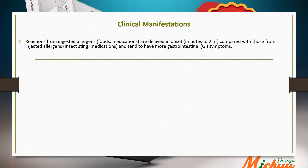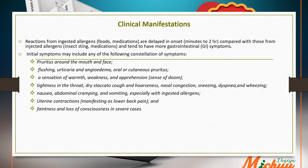Anaphylactic reactions from ingested allergens such as food and medications are delayed in onset — most often minutes to two hours — compared with those from injected allergens such as insect stings and medications, and they tend to have more gastrointestinal symptoms. Initial symptoms may include pruritus around the mouth and face, flushing, urticaria, angioedema, oral pruritus, sensation of warmth, weakness, depression, tightness in the throat, dry staccato cough, hoarseness, nasal congestion, sneezing, dizziness, and wheezing.